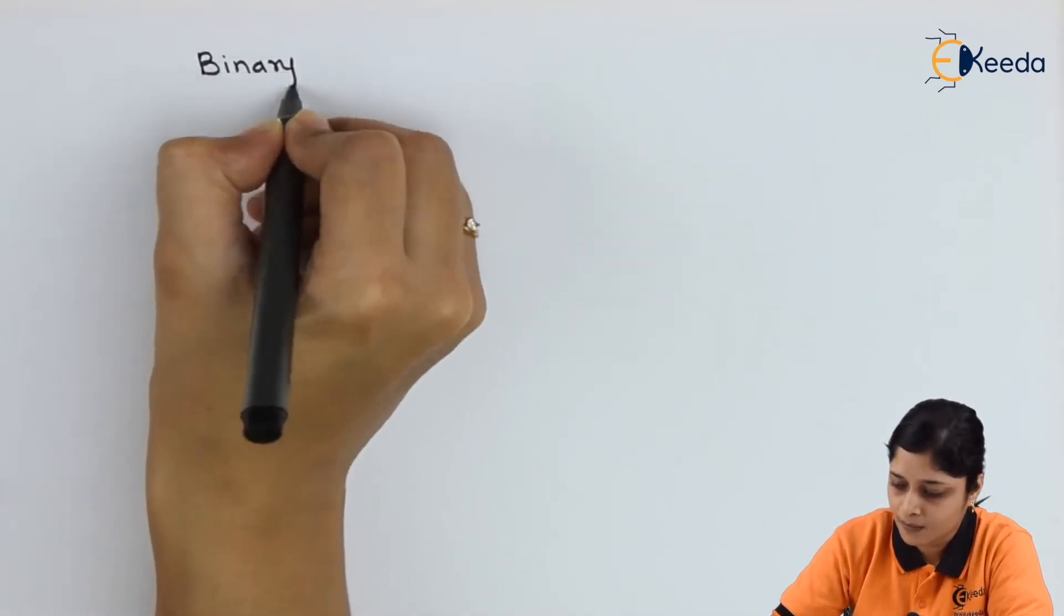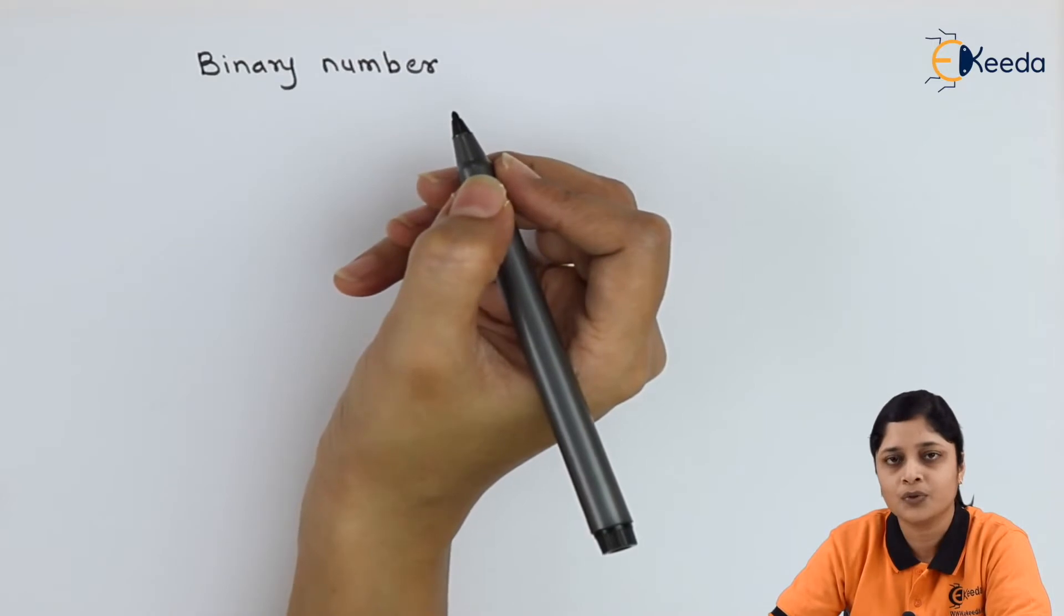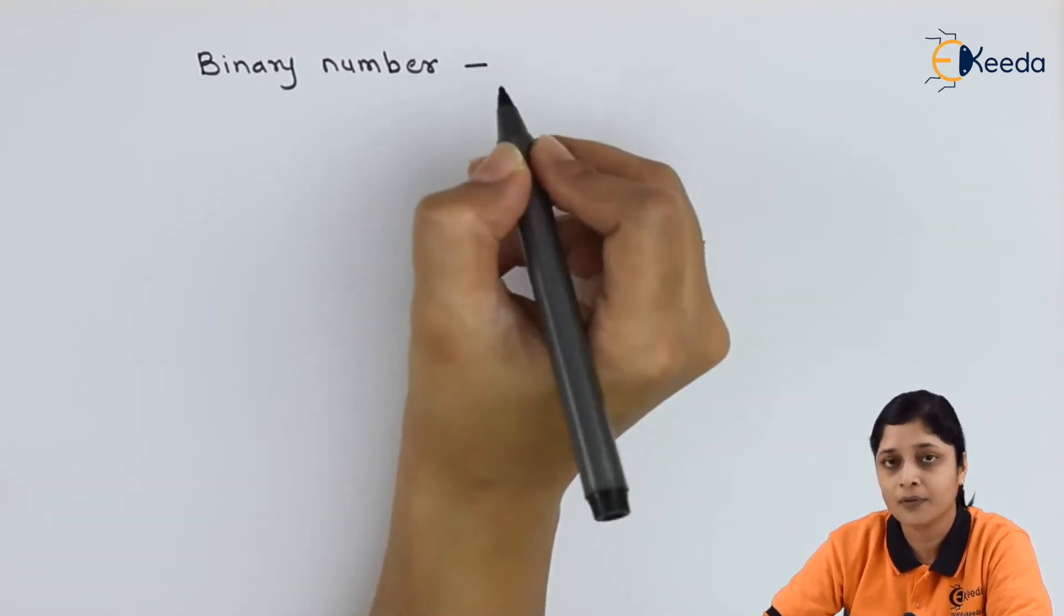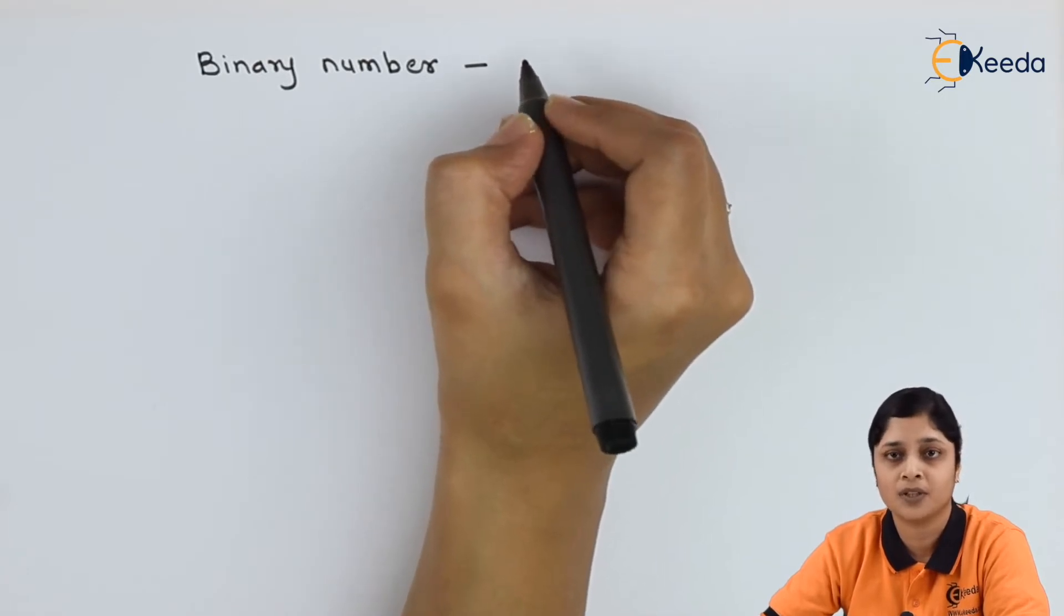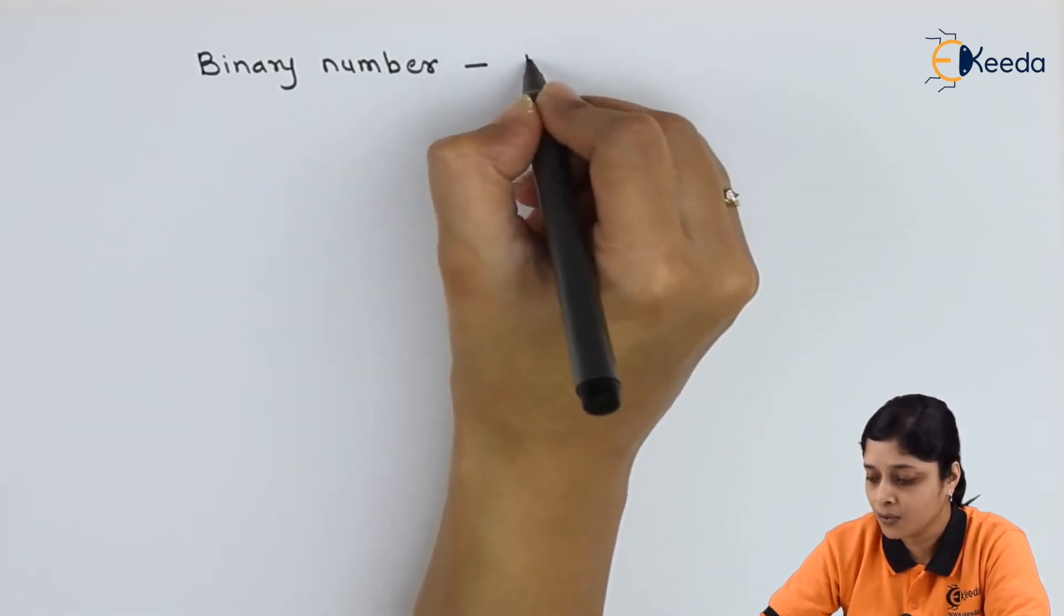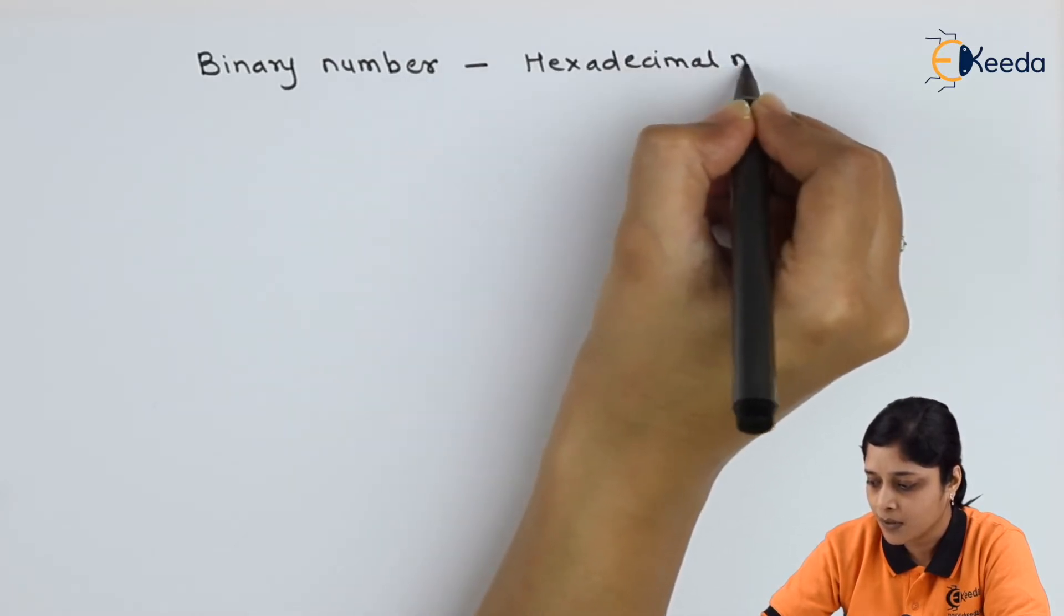Let's start with first example. Binary number is available to you. Your aim is, you have to write, you have to be very specific in which system you have to convert.